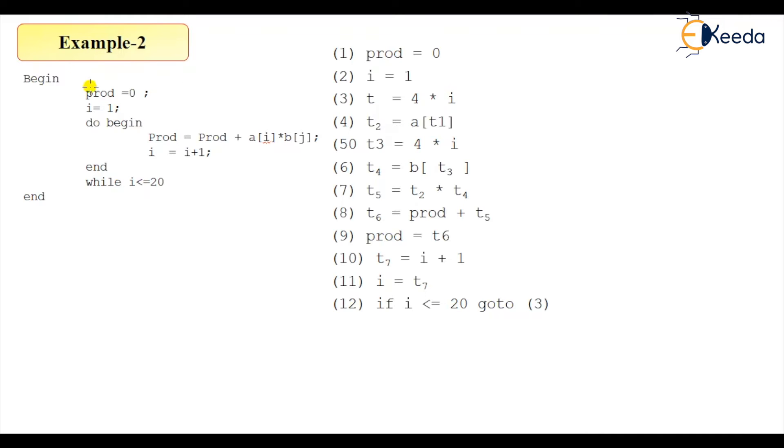So here, this is the production and i equals 1, and production is accumulating the value of a[i] multiplied by b[j]. And i is getting incremented, i is assigned to 1 and 1 to 20.